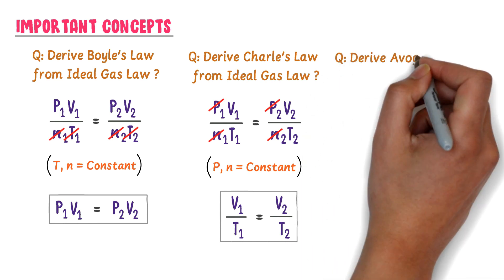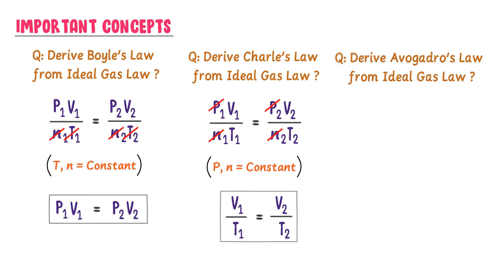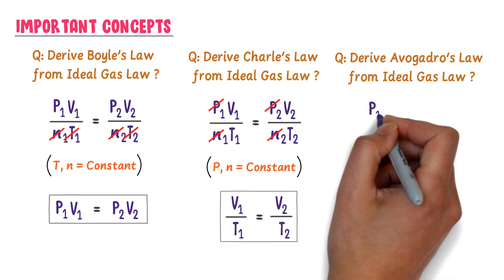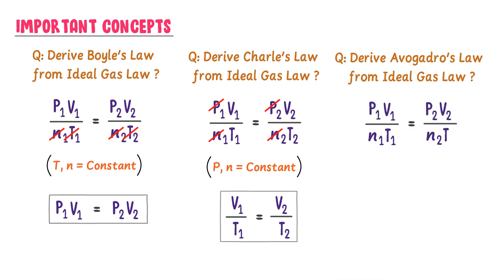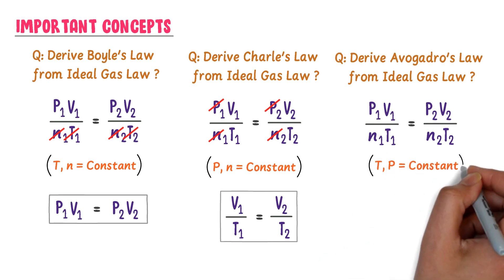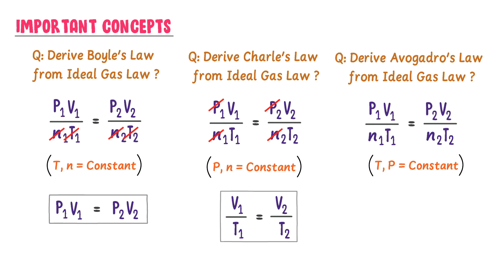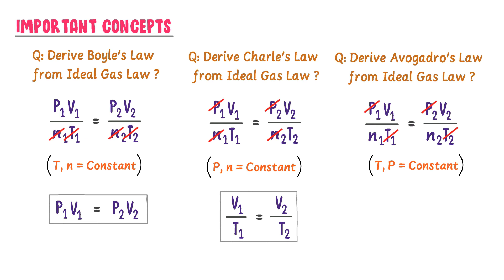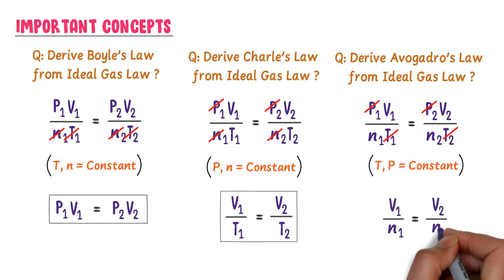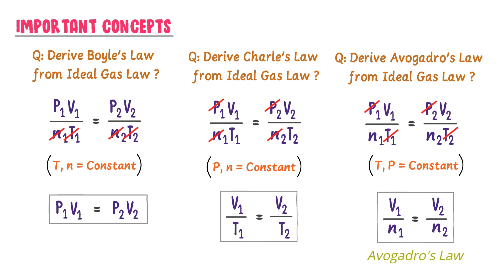To derive Avogadro's law from the ideal gas law: starting with P₁V₁/N₁T₁ = P₂V₂/N₂T₂, Avogadro's law is derived at constant temperature and pressure, so canceling those constant variables gives V₁/N₁ = V₂/N₂. This is Avogadro's law and the required proof.